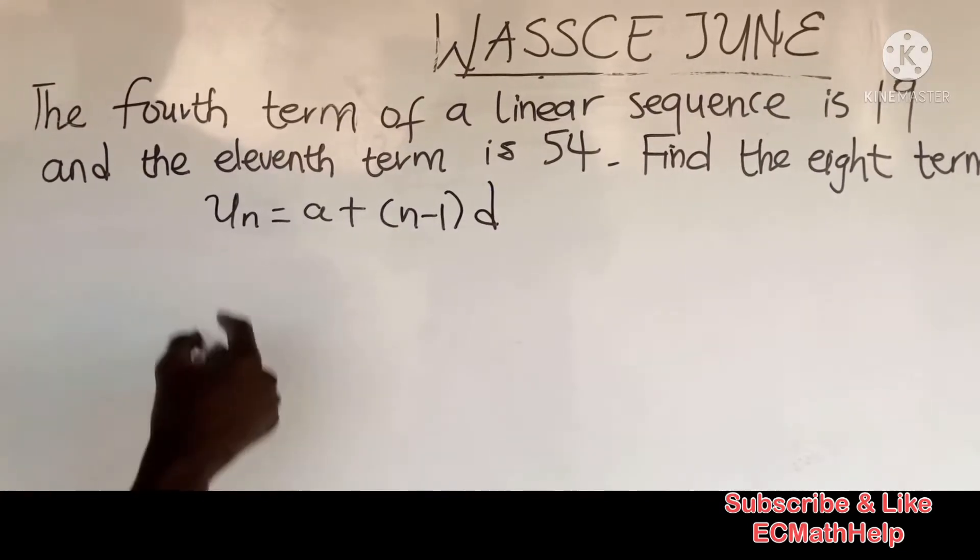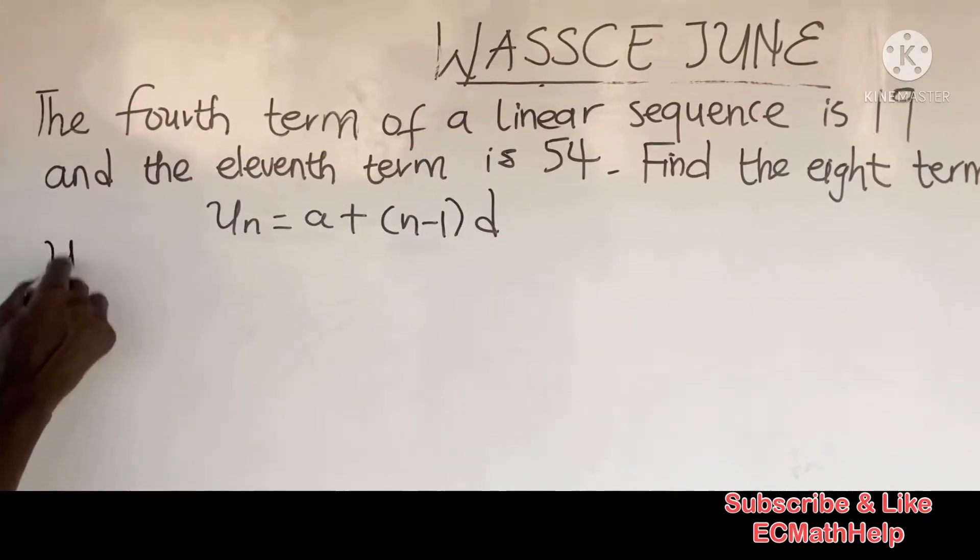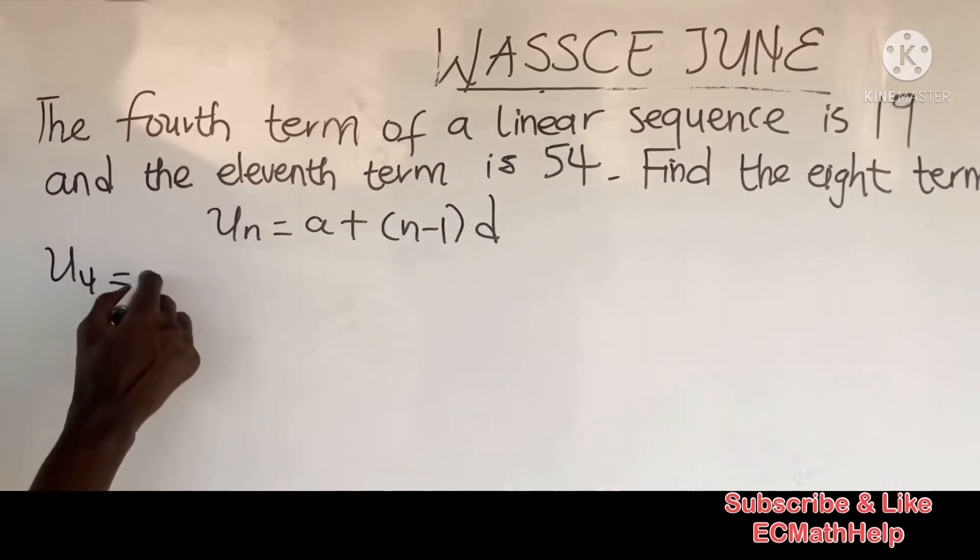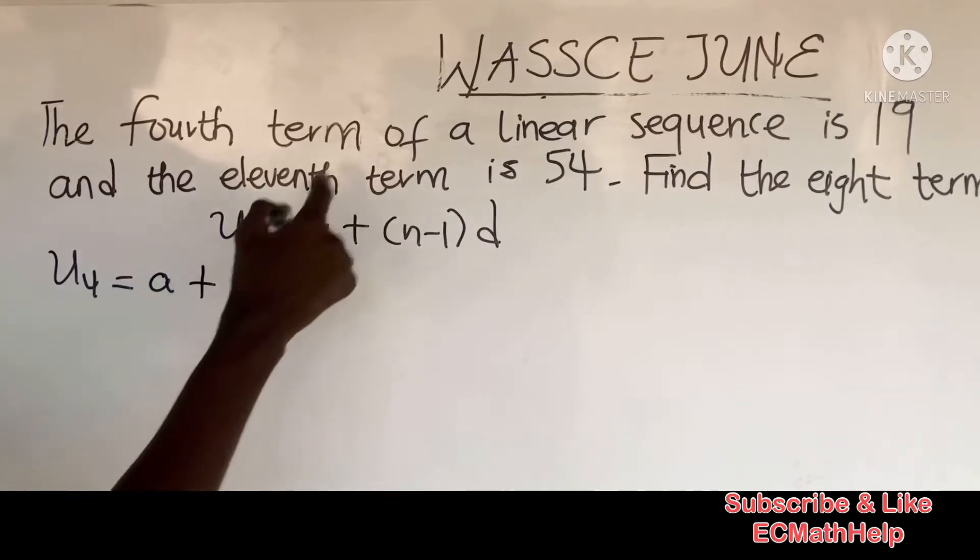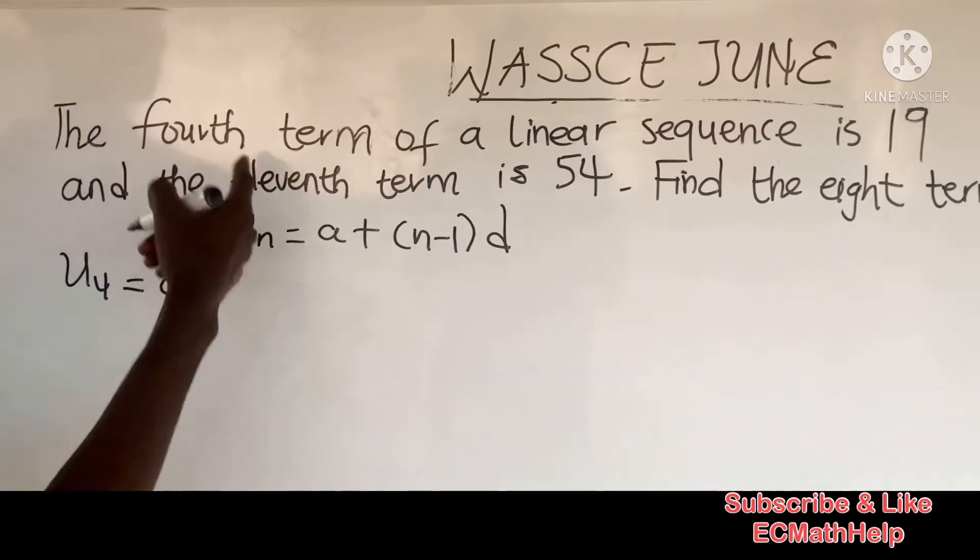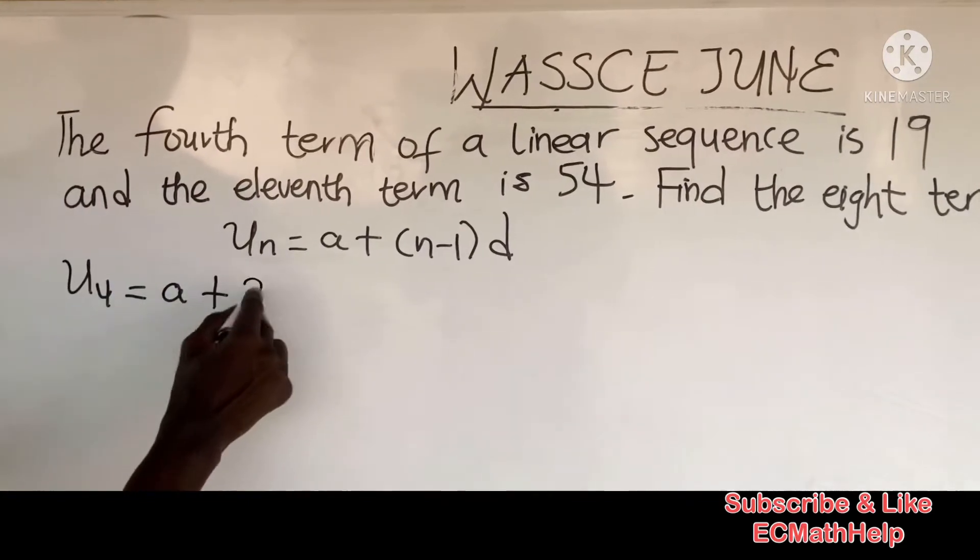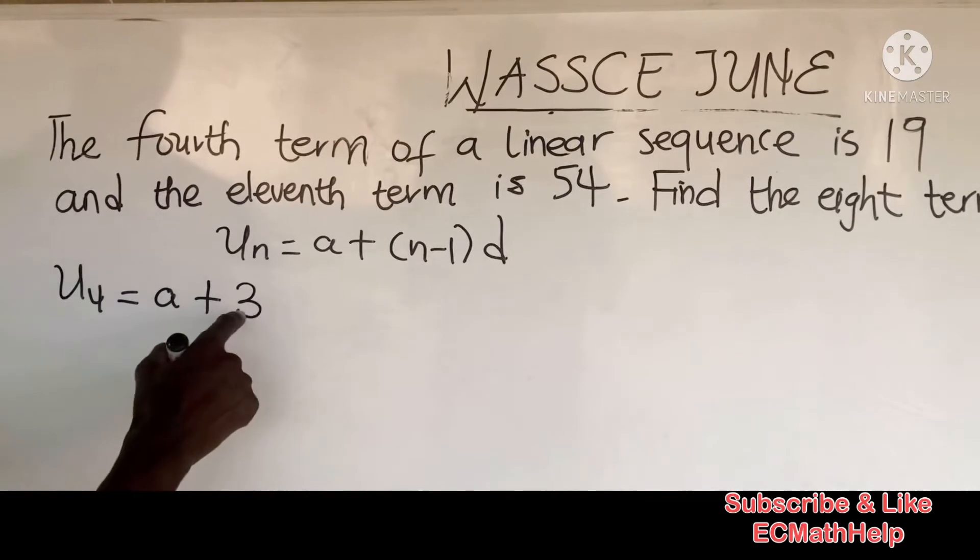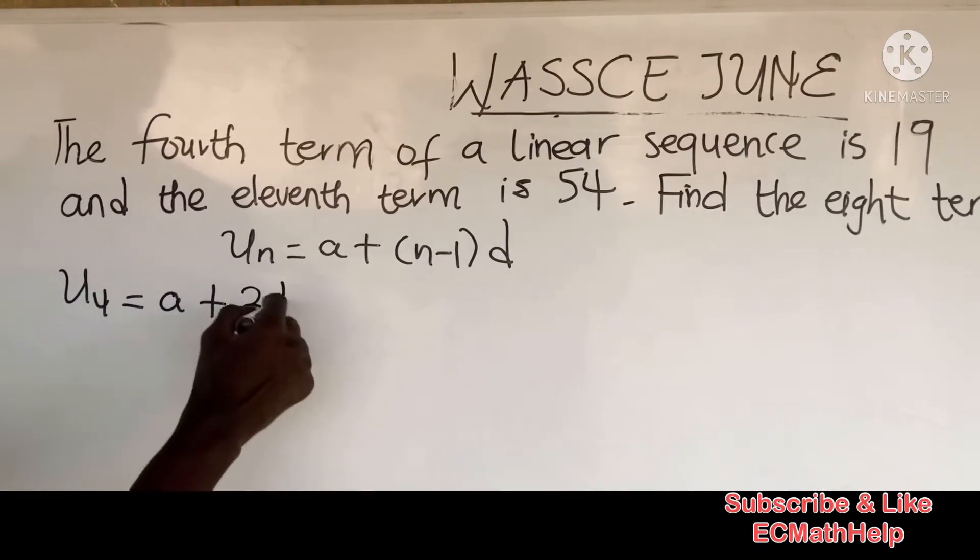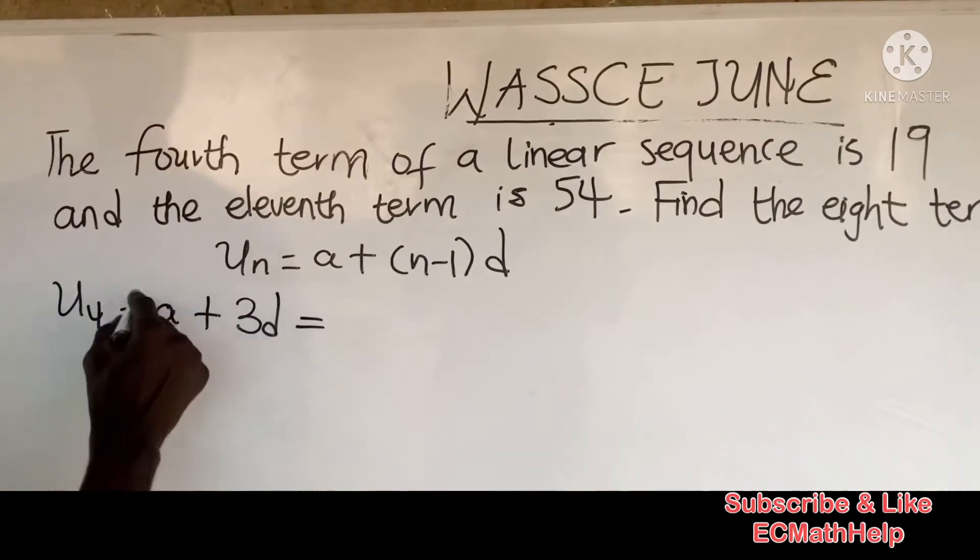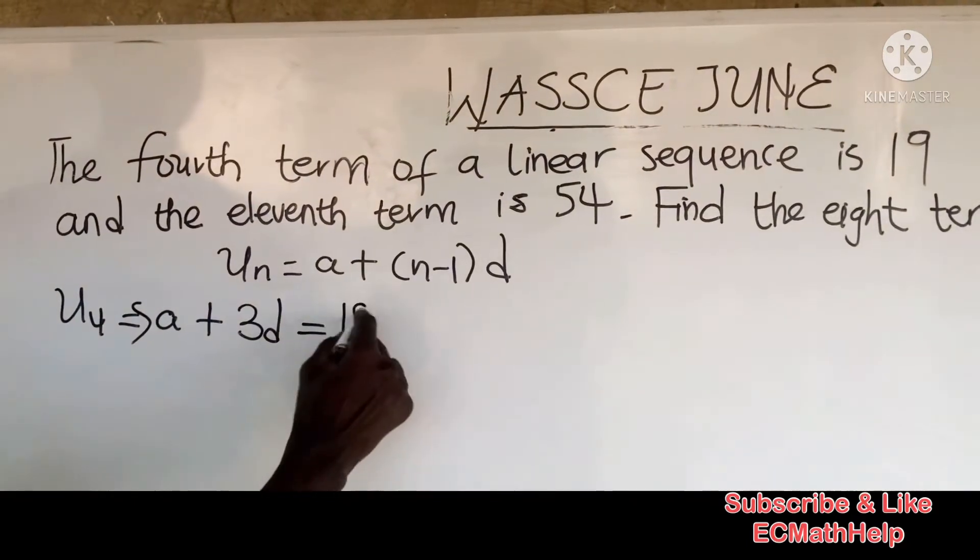The fourth term is a plus 3d, where a is the first term we don't know. For the fourth term, we have three terms after the first, so it's three times the difference. This equals 19.